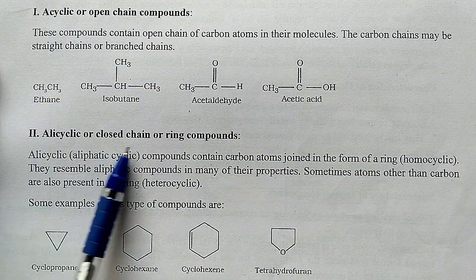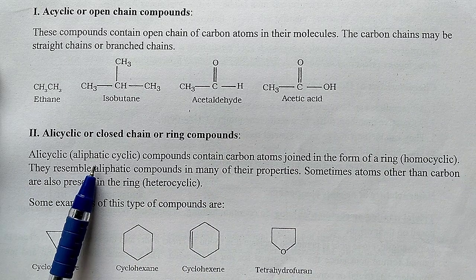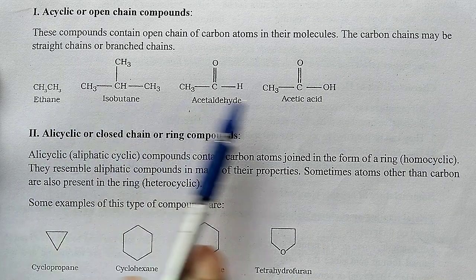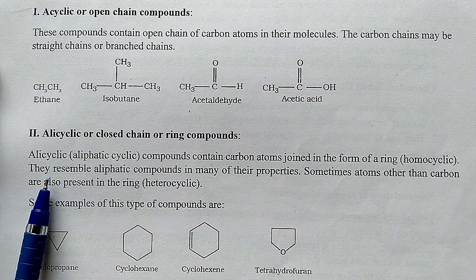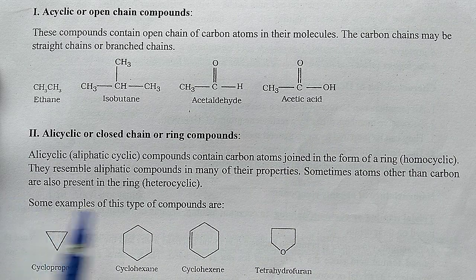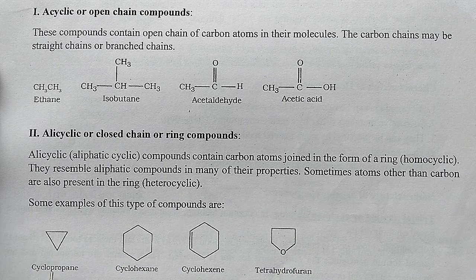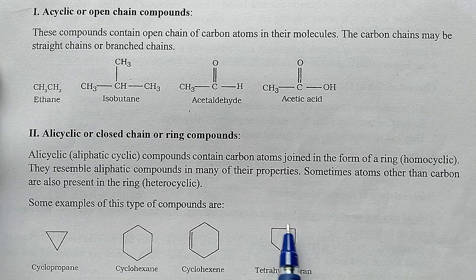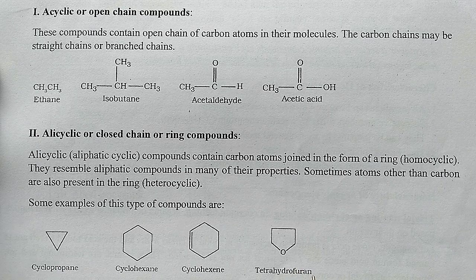Second is alicyclic or closed chain or ring compounds. Alicyclic means aliphatic cyclic — their properties are similar to the properties of open chain compounds, hence these are called alicyclic or aliphatic cyclic compounds. They resemble aliphatic compounds in many of their properties. Sometimes atoms of other elements are also present along with carbon — these are called heterocyclic compounds. Examples include cyclopropane, cyclohexene (because one double bond is present), and tetrahydrofuran.